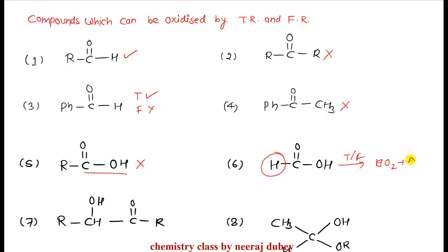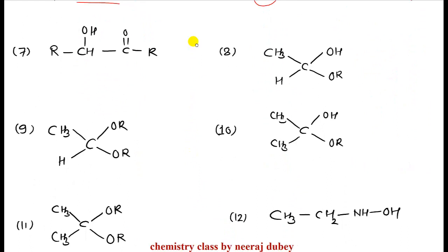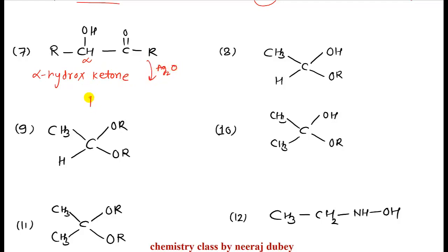Next example: the molecule is a ketone, but a hydroxy group is present at the alpha position. The important point is that alpha-hydroxy ketones also react with Tollens' and Fehling's reagents. When reacted with silver oxide, the alcoholic group gets oxidized and the product formed is R-C=C=O-R.